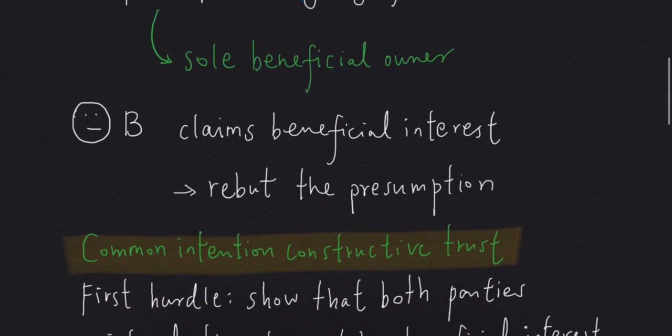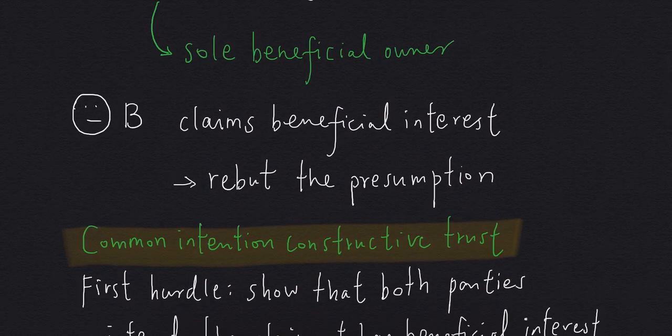Let's say B comes along. B wants to claim beneficial interest in the property. So B has to rebut the presumption of equity follows the law. B has to establish Common Intention Constructive Trusts.